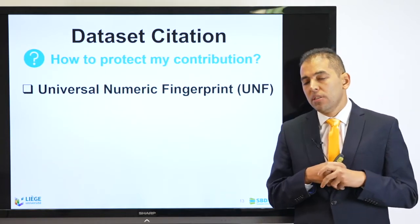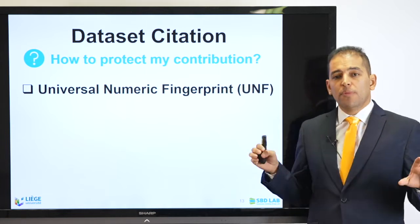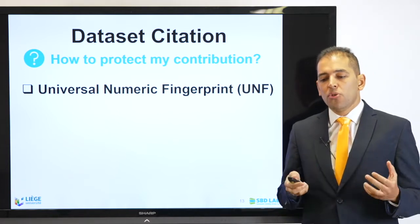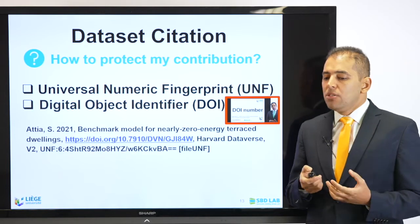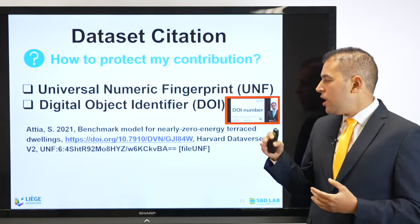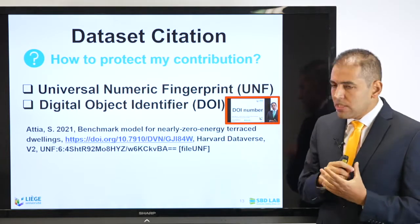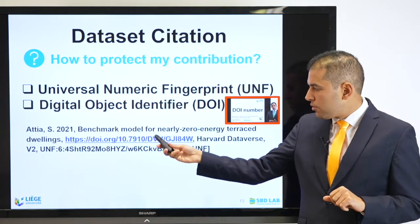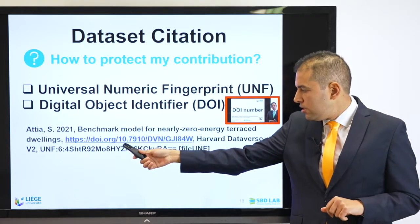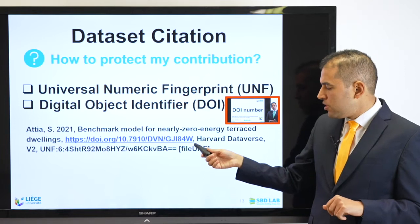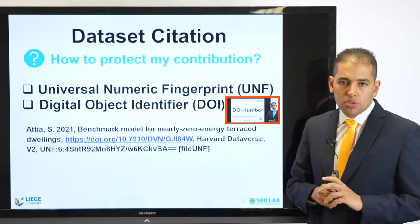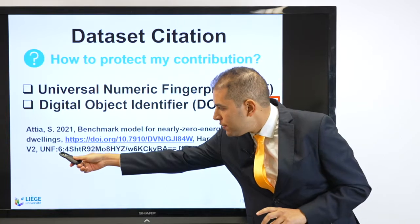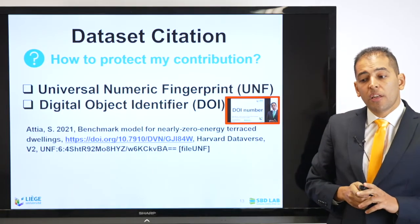Now we come to the very important part: how to protect your contribution. If you want to share a dataset, don't worry because it will be on your name. You just need to have a universal numeric fingerprint — a Digital Object Identifier, DOI. Here is an example of one of my datasets that I published in 2021. It's a benchmark model with my name, the year, the DOI number. I published it in a depository called Harvard Dataverse. This is the unique numeric fingerprint, the UNF. Anybody can trace it and access it.